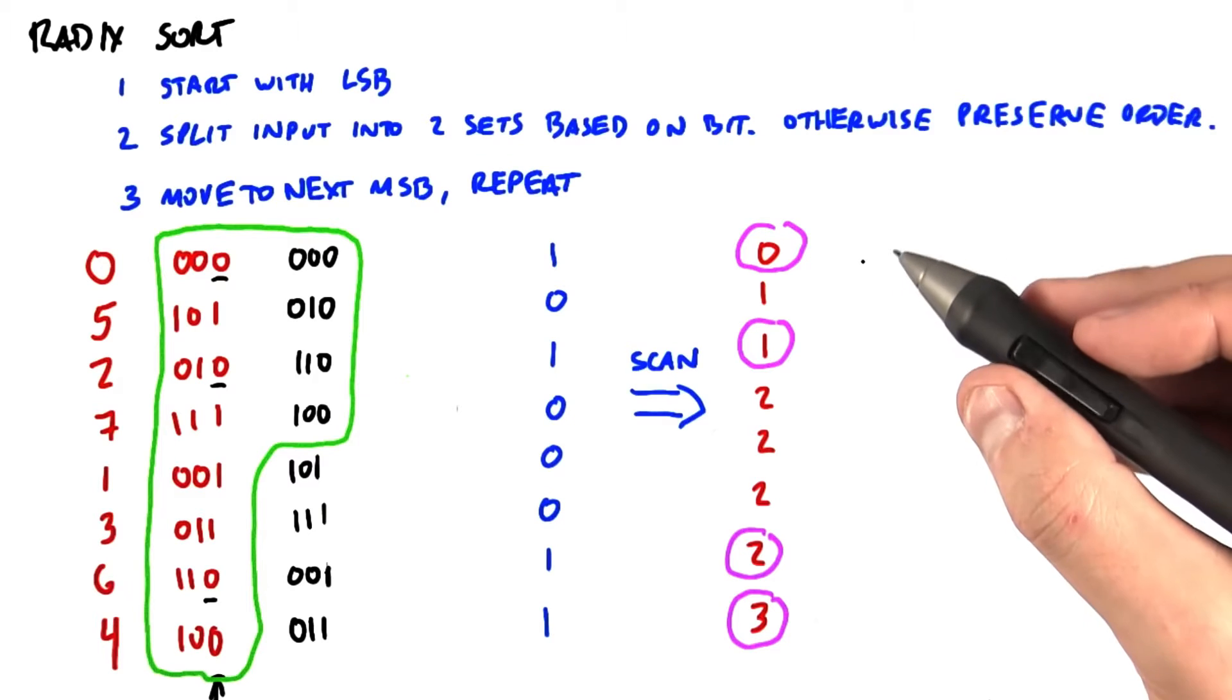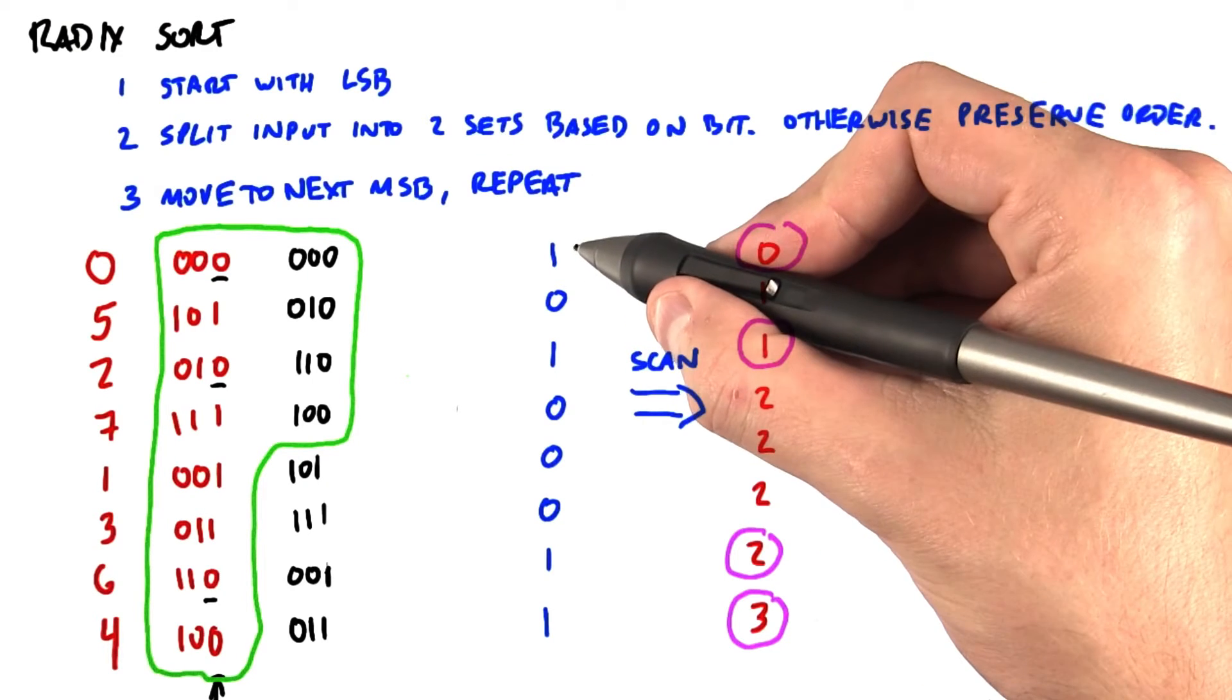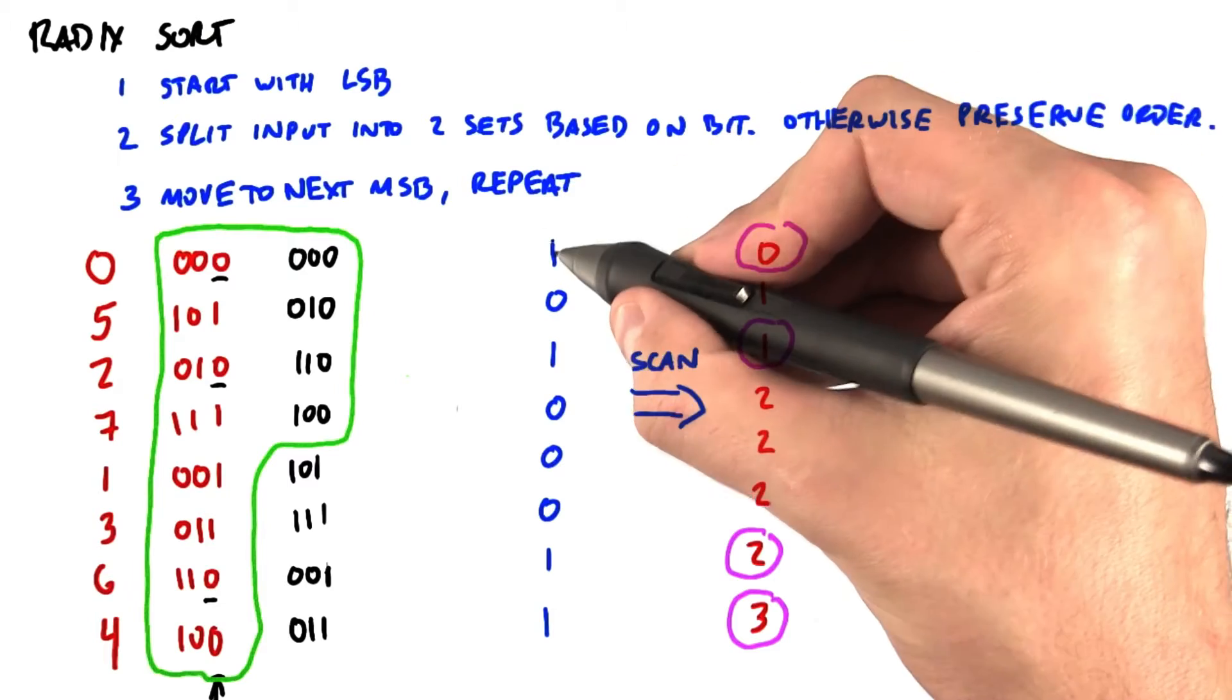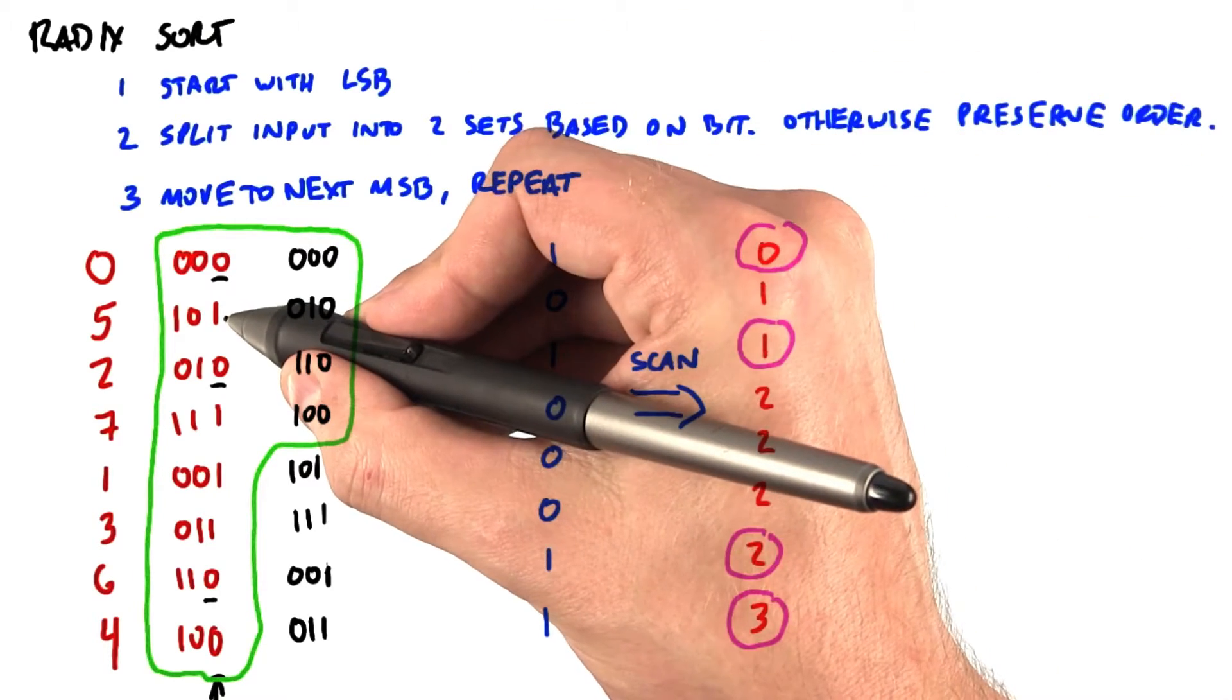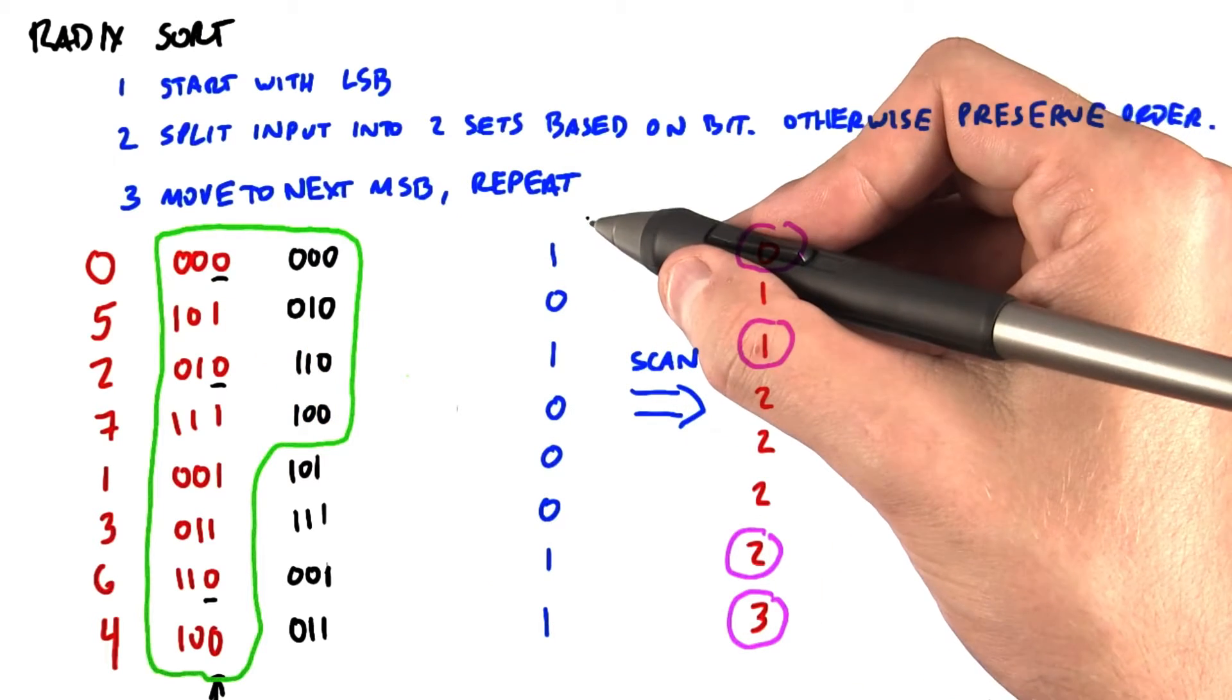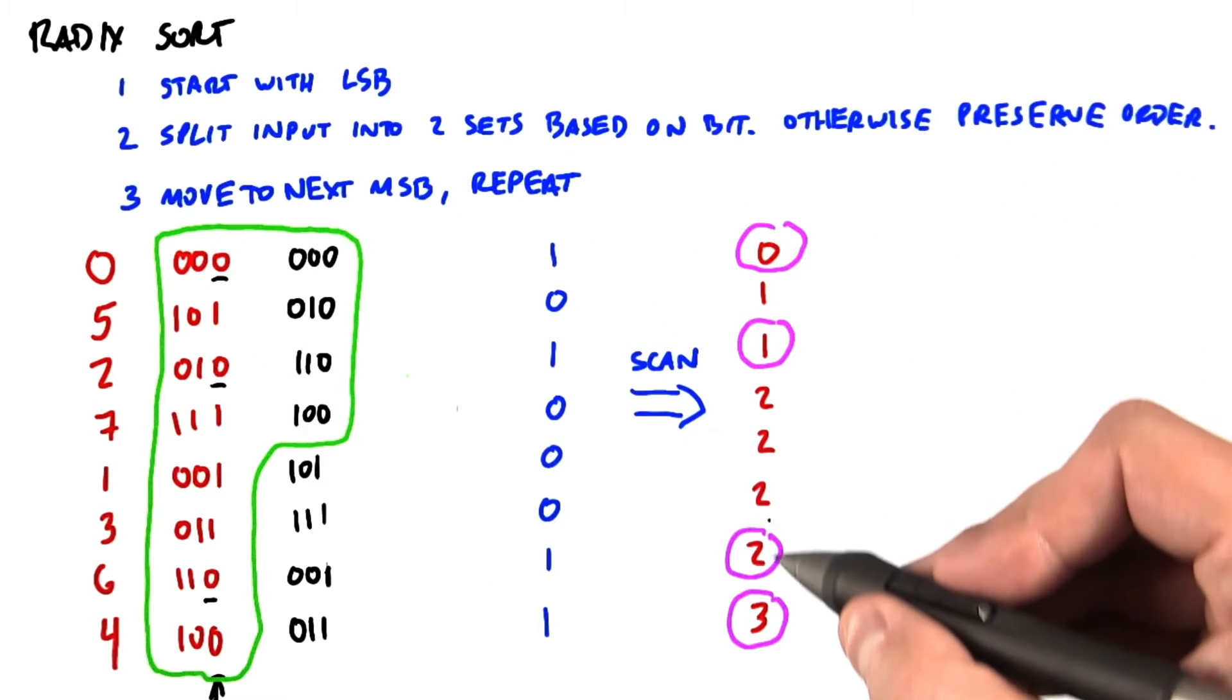What we're really doing here is simply running a scan over the input. The input to the scan is a 1 for each 0 bit and a 0 for each 1 bit, and that will give us the scatter addresses for the 0 half of the split.